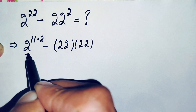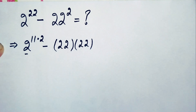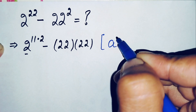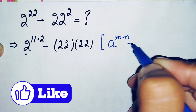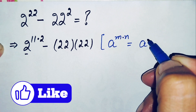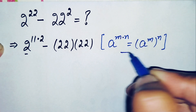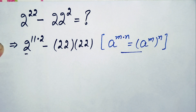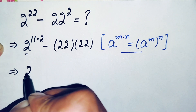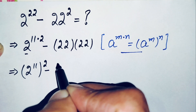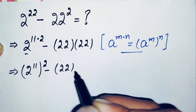In the first term we will use the exponent math property: a raised to power m times n can also be written as a raised to power m, all raised to power n. Using this property, the equation becomes 2 raised to power 11, whole squared, minus 22 times 22.